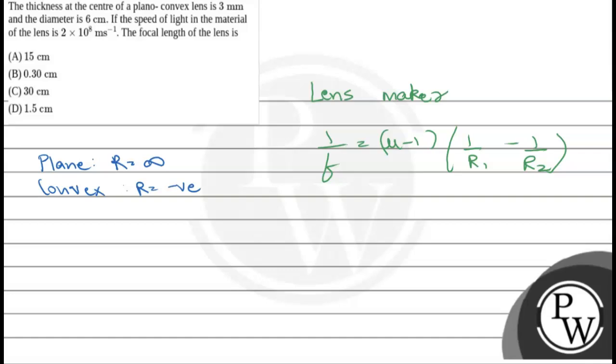If we put the values, then 1/f = (1.5 - 1)(1/∞ - 1/R2). R2 we calculated as 15.15, but for a convex lens it's negative. So it's minus 15.15. If we calculate, the focal length approximately comes out to be 30 centimeter. So the final answer is the focal length of the lens is 30 centimeter, which is option C.